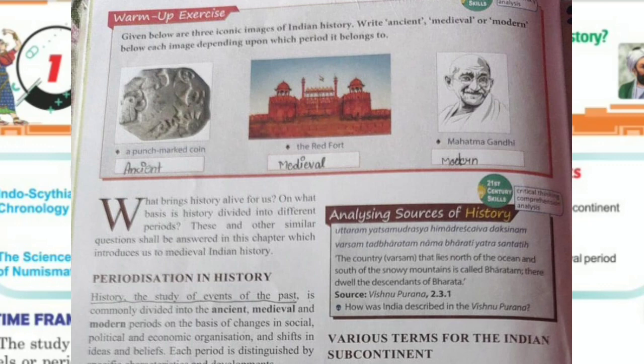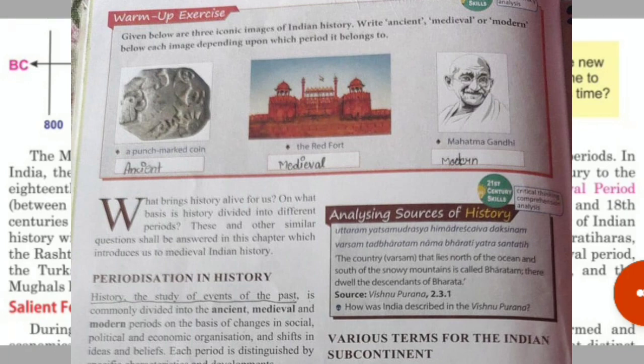It is generally divided into two periods: the early medieval period between the 8th and 12th century AD, and the later medieval period between the 13th and 18th century AD. In the early medieval period, the Palas, the Pratiharas, the Rashtrakutas, the Cholas and early Rajputs ruled in India. In the later medieval period, the Turks, who later established the Delhi Sultanate, various regional kingdoms and the Mughals largely dominated the fate of history.